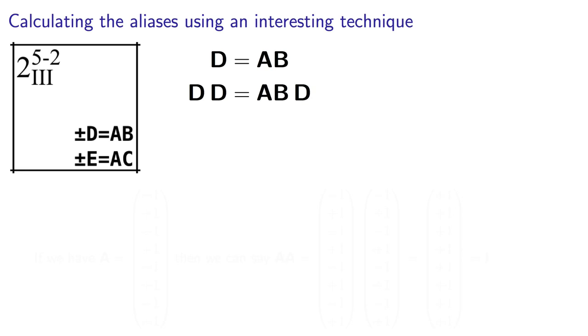So here, for example, we multiply by D on both sides. So we get D times D equals ABD. This creates a desirable simplification that I'll quickly demonstrate. Now we introduce a quick rule.